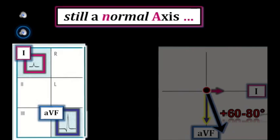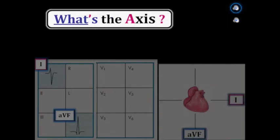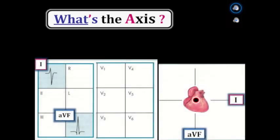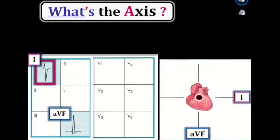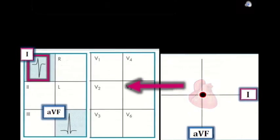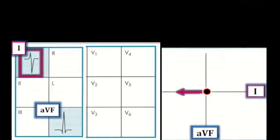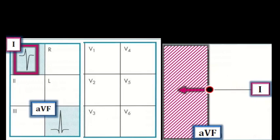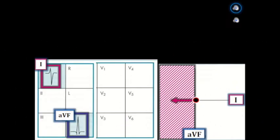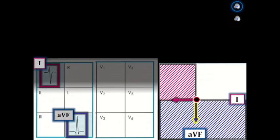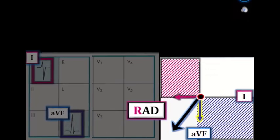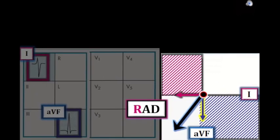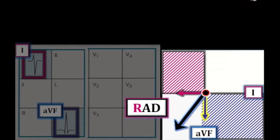In this example, the QRS complex is predominantly negative in lead I, placing the axis in the right hemisphere. The net QRS deflection in lead aVF is still clearly positive, so the axis is inferior. Estimating the average direction for these two vectors, there is considerable RAD — right axis deviation. Whether the actual number is plus 100, plus 110, or plus 120 degrees is difficult to determine, but clinically what counts is that there clearly is RAD.